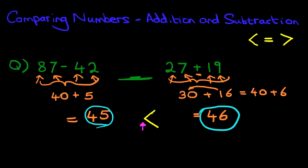And we can add this symbol into the question up here. So now this reads, 87 minus 42 is less than, or we can say smaller than, 27 plus 19.